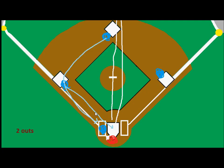The catcher catches the ball and tags out the runner who originally started on second base — that would presumably be the third out in the inning. However, while this is going on, the runner who started on first base, coming around second base, for whatever reason stepped over second base and did not touch it.